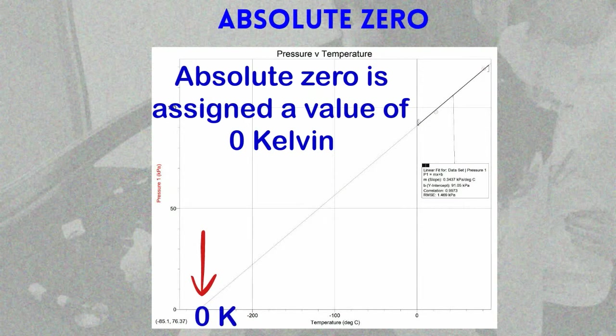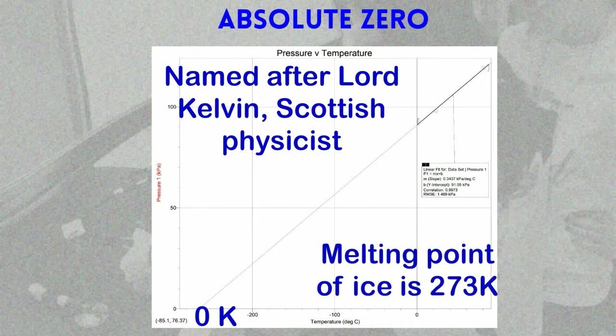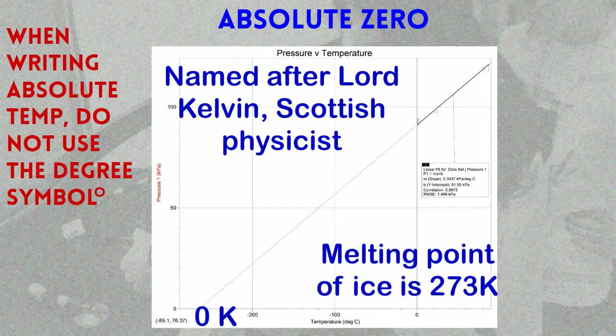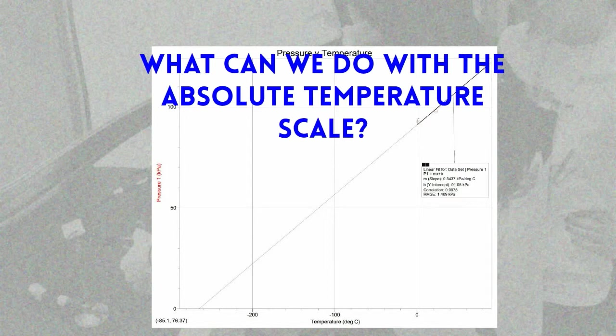The scale is named after Lord Kelvin, a great Scottish physicist of the early 20th century who suggested its existence first. Now let's look for a moment at something we can do with the absolute temperature scale.